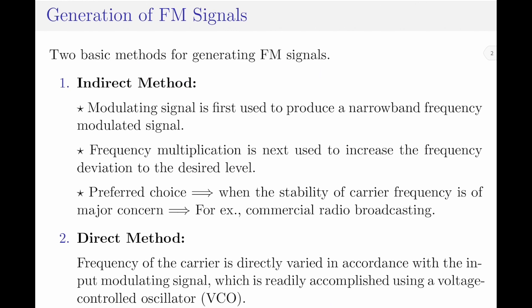Before I begin, let me briefly cover the different methods of generating frequency modulated signals. There are essentially two basic methods. The first is called the indirect method, where the modulating signal is first used to produce a narrow band frequency modulated signal, and then frequency multiplication is used to increase the frequency deviation to a desired level.